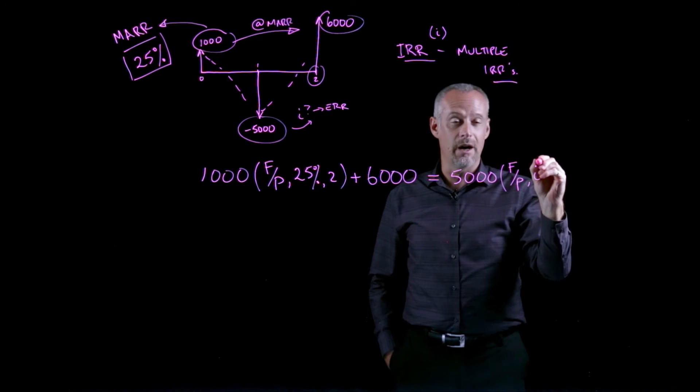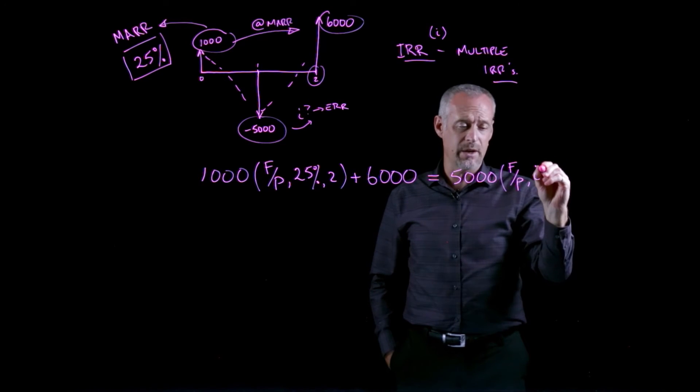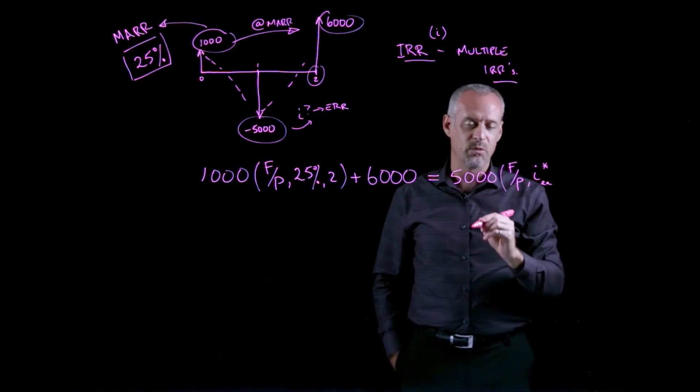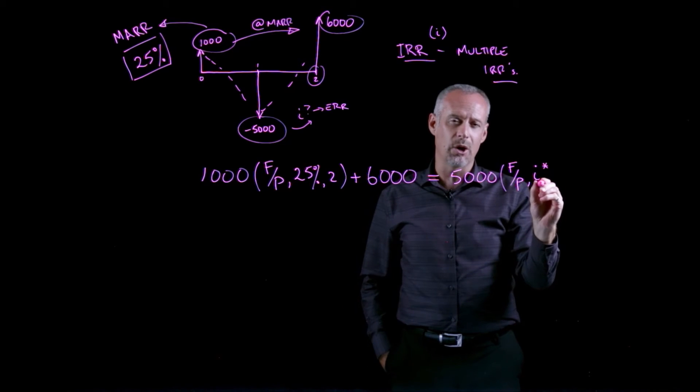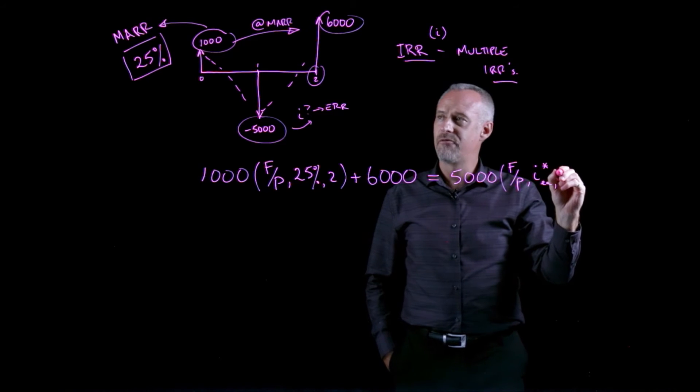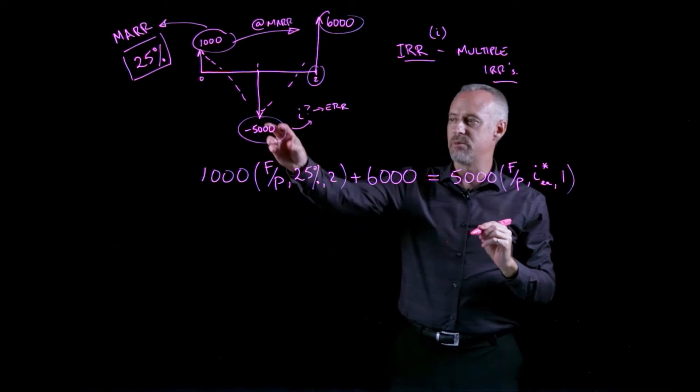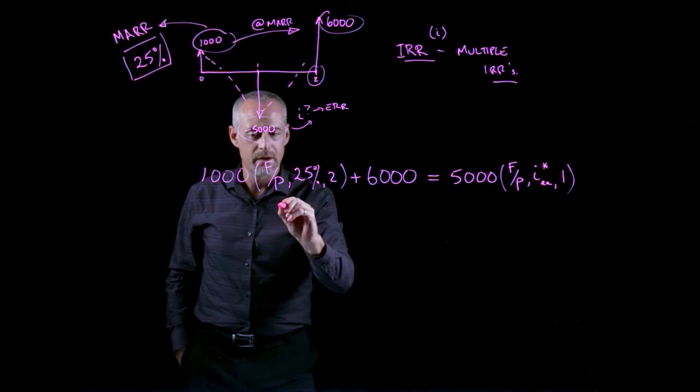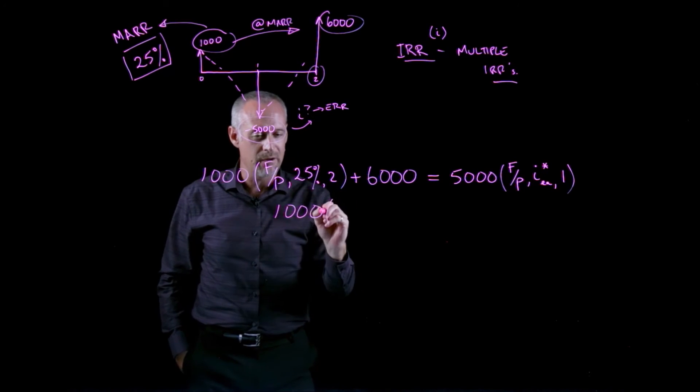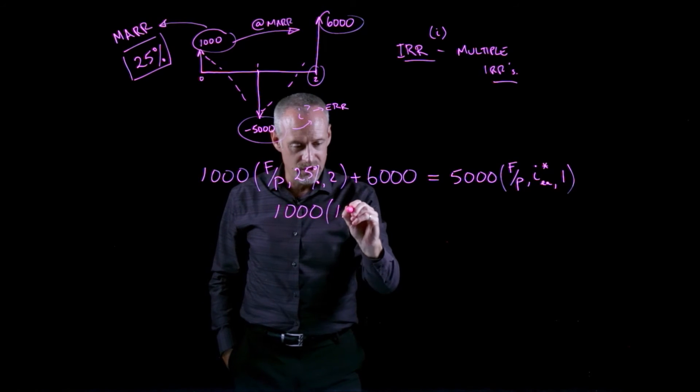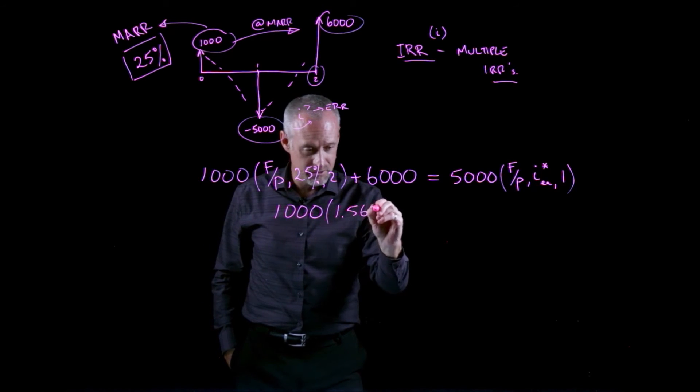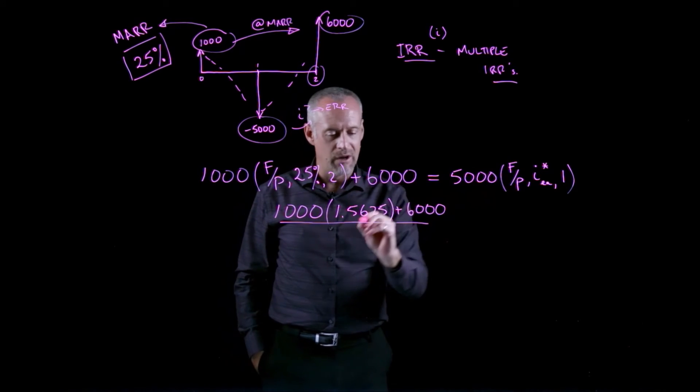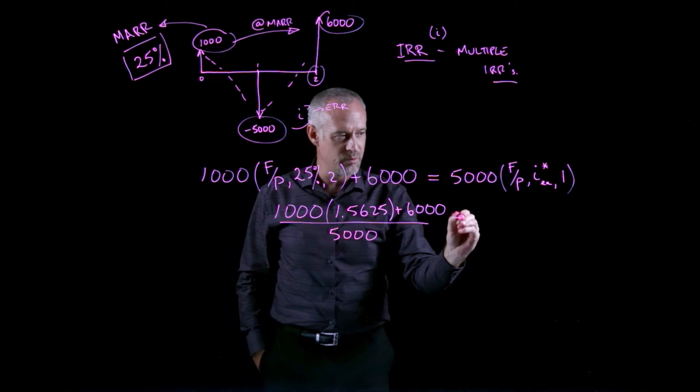I can write it as 5,000 times the F given P, I, and the I I use here is actually what I'm looking for. Sometimes we'll call that I star, and some texts will abbreviate that as EA, meaning the ERR approximate, for one period. If I go ahead and figure out what this is, 1,000 times the F given P factor for 25% interest for two periods is 1.5625, plus 6,000, and then I can divide that by 5,000.